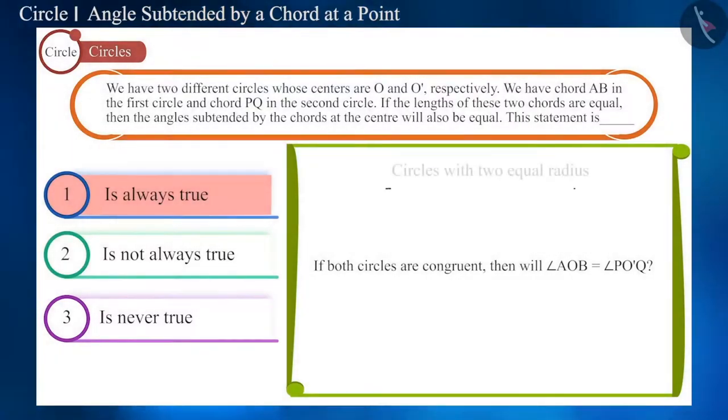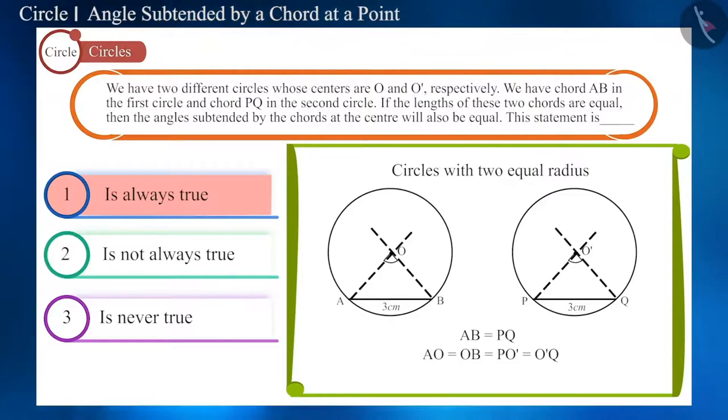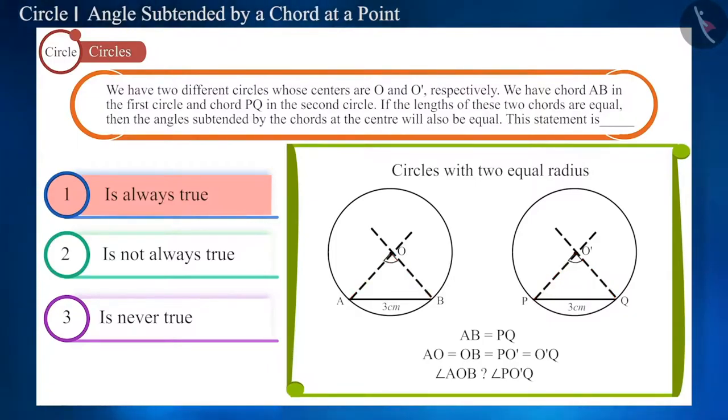If we take two circles of equal radius and draw the chords which are equal in length. Here, both AB and PQ are 3 cm in length. Will the angles subtended by these equal chords at the center, i.e., angle AOB and angle PO-Q also be equal?